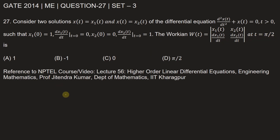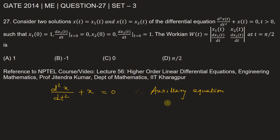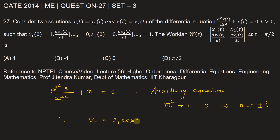Let us first write the given differential equation: d²x/dt² + x = 0. For this differential equation, we can write the auxiliary equation, which will be m² + 1 = 0. From here we get m = ±i. Therefore, the general solution of this differential equation will be x = c1·cos(t) + c2·sin(t). Let this be equation number one.